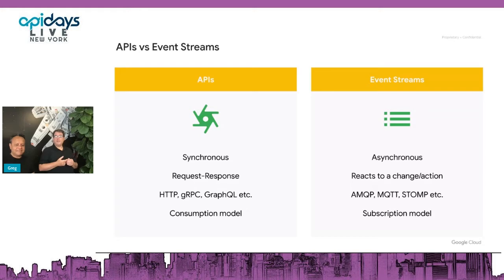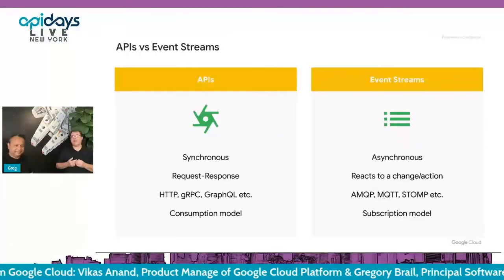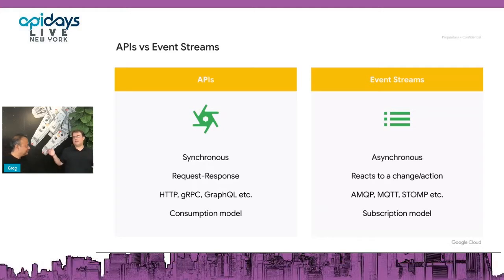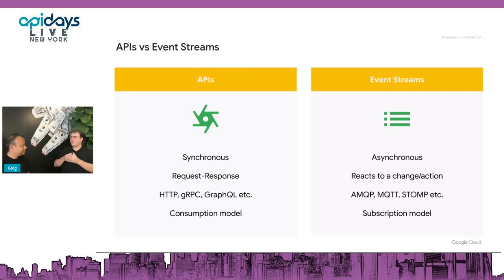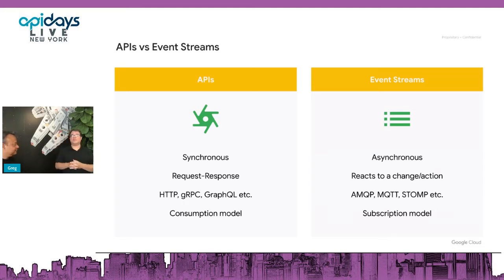Event streams do often have a subscription model. Over the years we've done various combinations of publish-subscribe and message queuing. But what I see nowadays is it's all kind of merging into one event stream paradigm where you put the events on a stream and you can consume them in different ways — persistently, non-persistently, and so on.